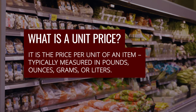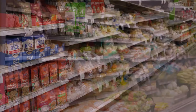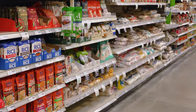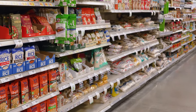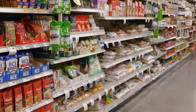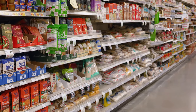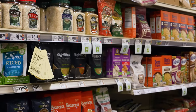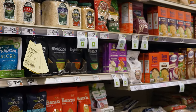So what is the unit price? It is the price per unit of an item, typically measured in pounds, ounces, grams, or liters. By understanding the unit price, you are able to compare the price of the item in different sized packages or from different brands, making it easier to select the product with the best price.